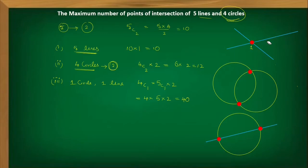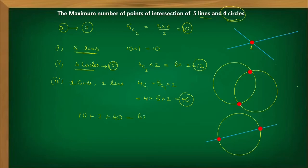Considering all three cases — lines with lines, circles with circles, and lines with circles — the maximum number of points is 10 + 12 + 40 = 62 points. So the maximum number of points of intersection of five lines and four circles is 62.